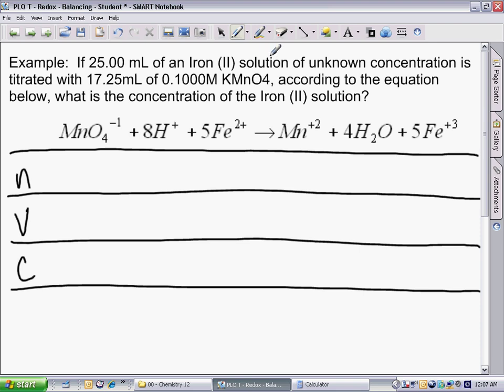We just plug in the values that we have. For the iron(II) solution, it is 25 mL, so iron(II) here, 25 mL. Of course, all volumes must be converted to liters, so that will be 0.025 liters.